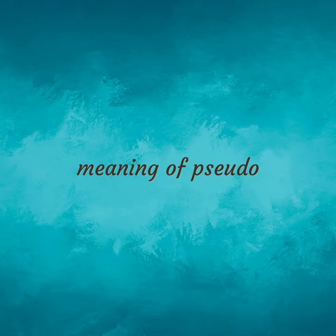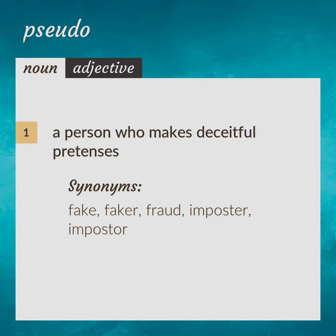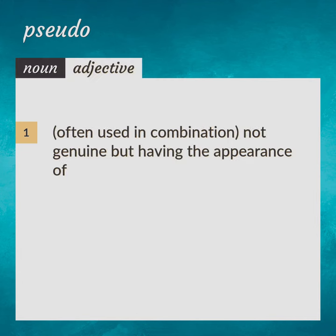Meaning of pseudo. A person who makes deceitful pretenses. Fake, faker, fraud, imposter. Often used in combination: not genuine, but having the appearance of — for example, a pseudo-aesthete.